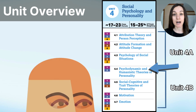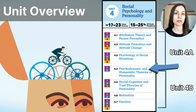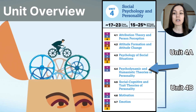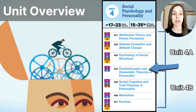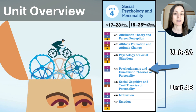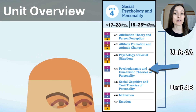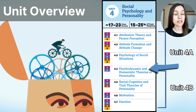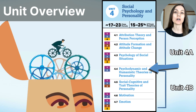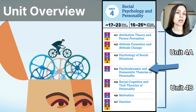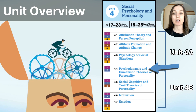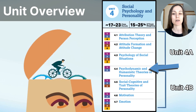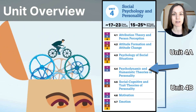If you notice at the top of the chart, the CED refers to unit 4 as social psychology and personality, but if you take a look at the list of topics in this second section, you'll notice that there are two additional topics that are not necessarily personality, but are related — motivation and emotion. So I'll still refer to this section as personality, but we are going to touch on a few other topics as well.